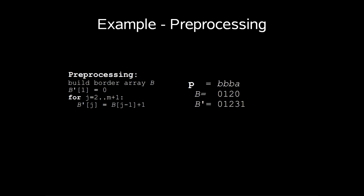So a quick example of this. First preprocessing. We have our pattern p, which is b, b, b, a. Our border array is 0, 1, 2, 0, and b prime is 0, 1, 2, 3, 1.